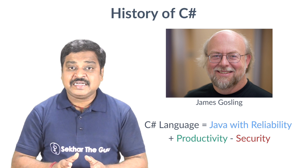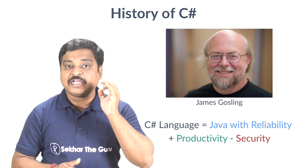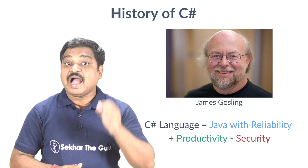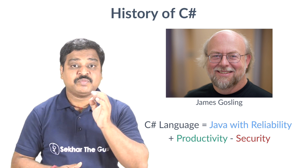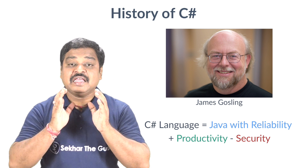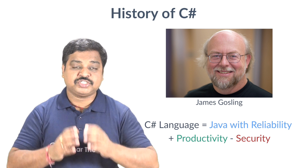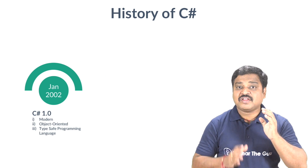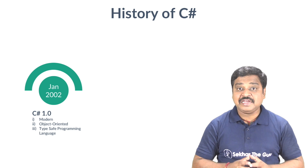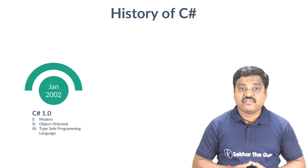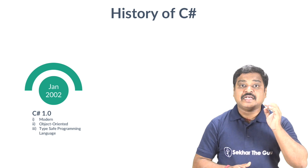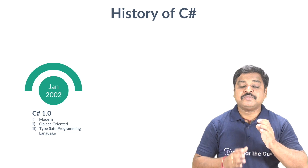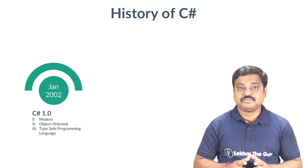Now let us understand how C Sharp has grown over the period of time and what features have been added in different versions. In January 2002, the first version of C Sharp was released along with .NET Framework 1.0 as a modern object-oriented type-safe programming language.